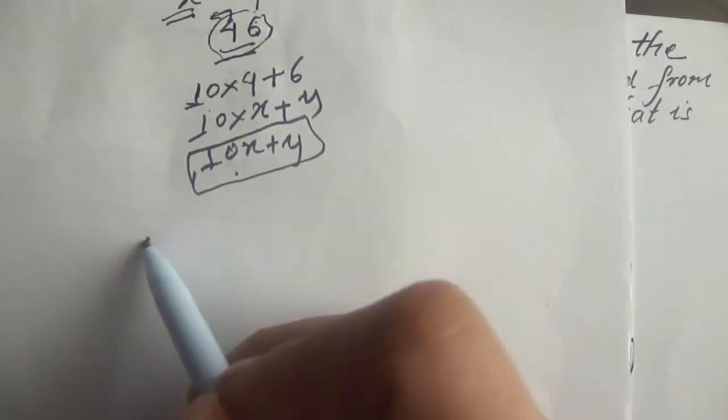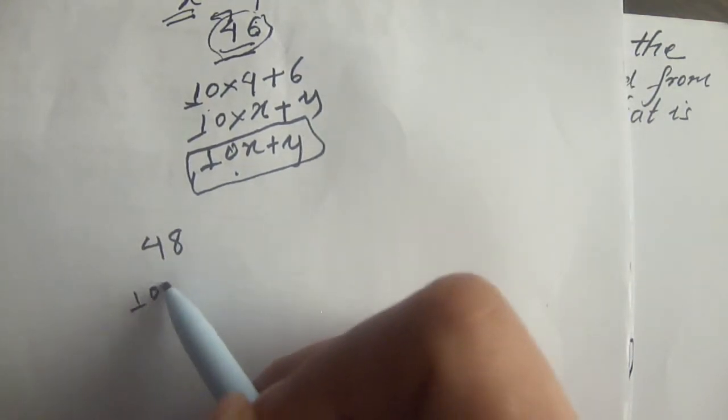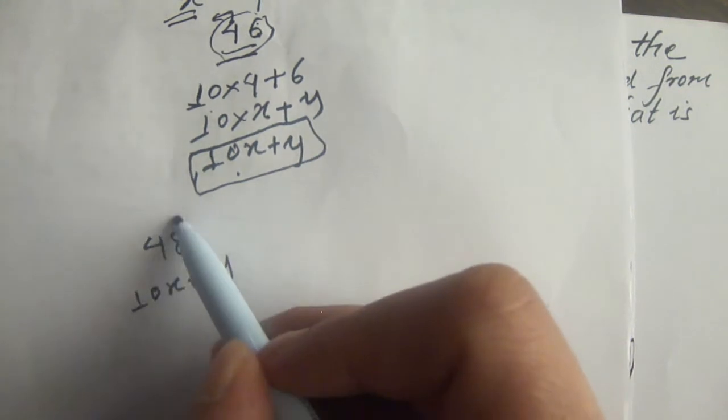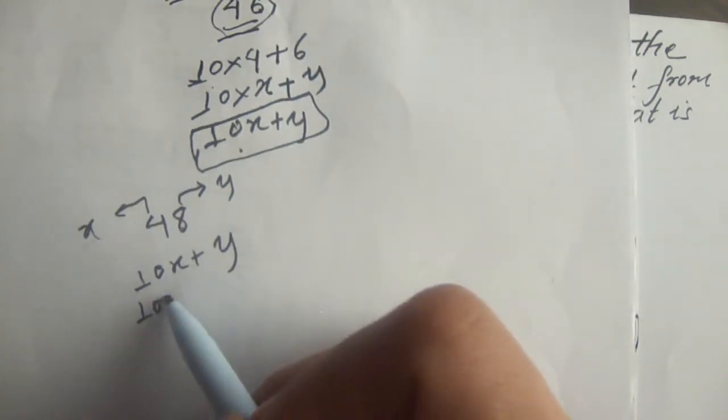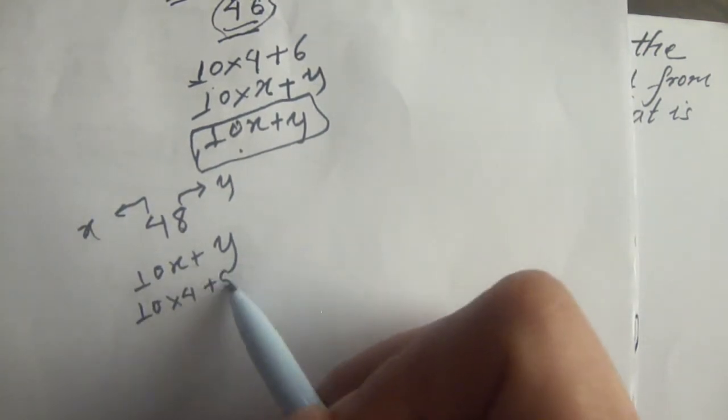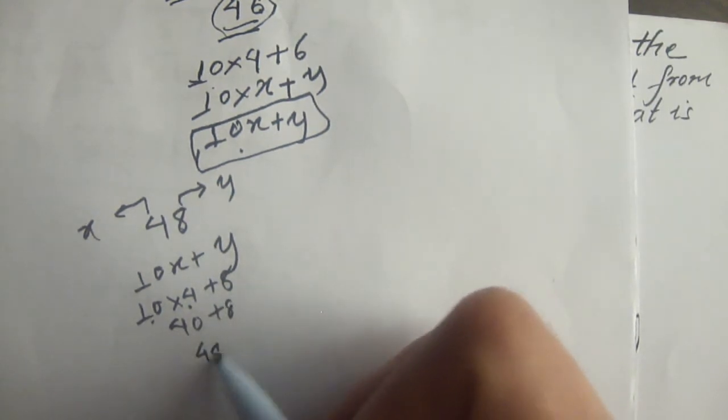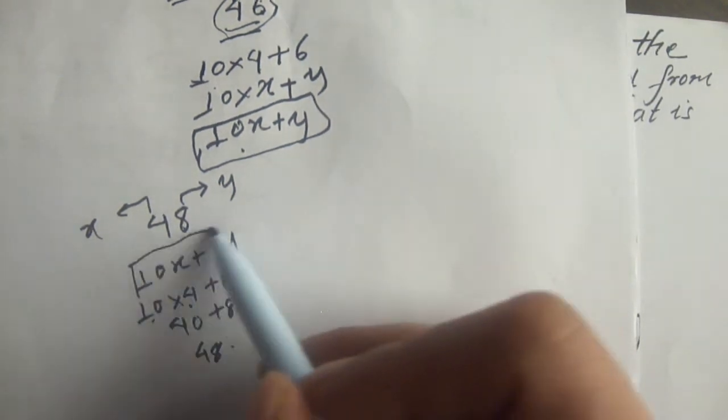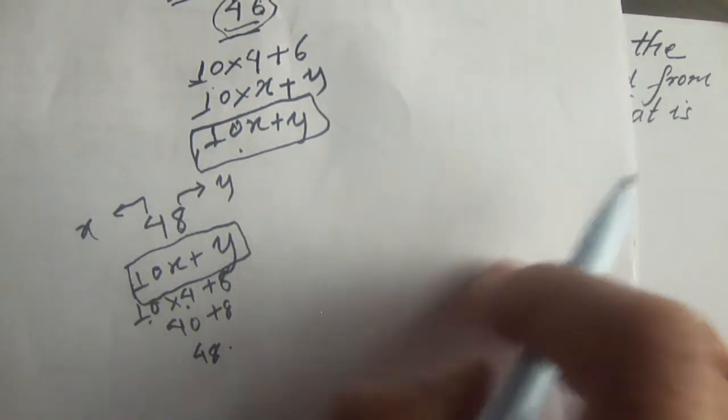For example, if we have 48, the 8 is y because it's in the one's place, and 4 is x in the ten's place. So it's 10 times 4 plus 8, which is 40 plus 8 equals 48. Therefore, 10x plus y represents a two-digit number as a general expression.